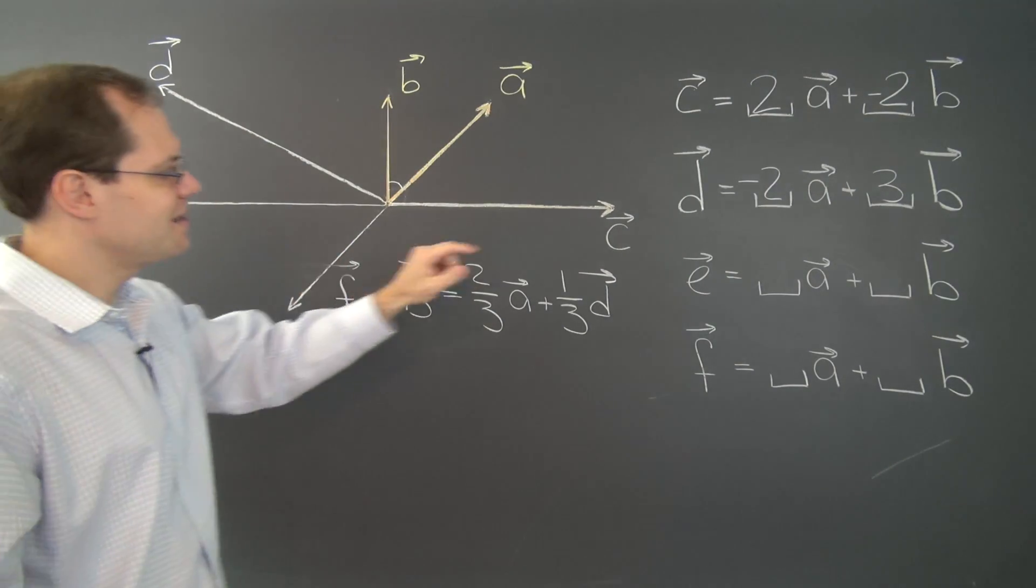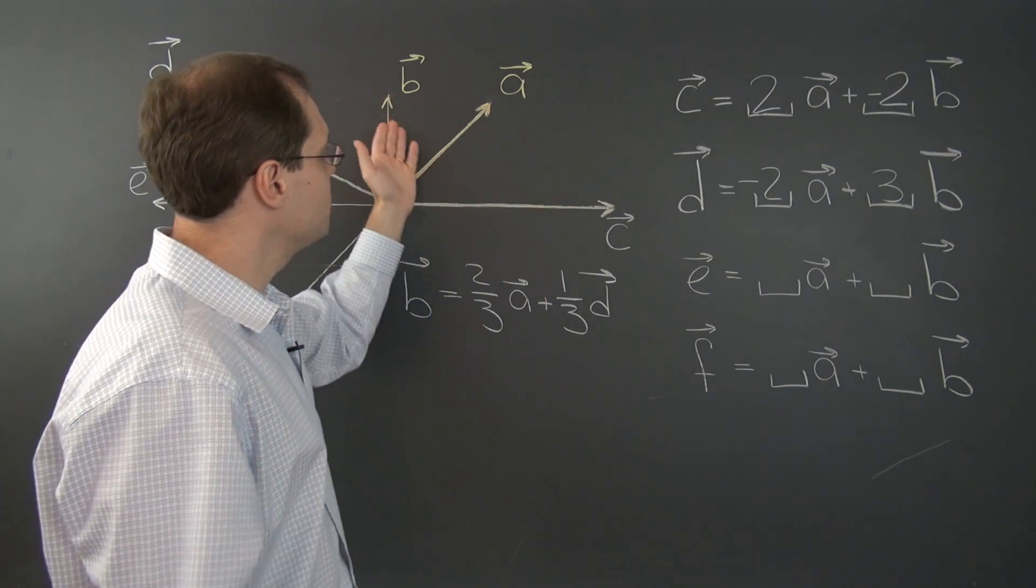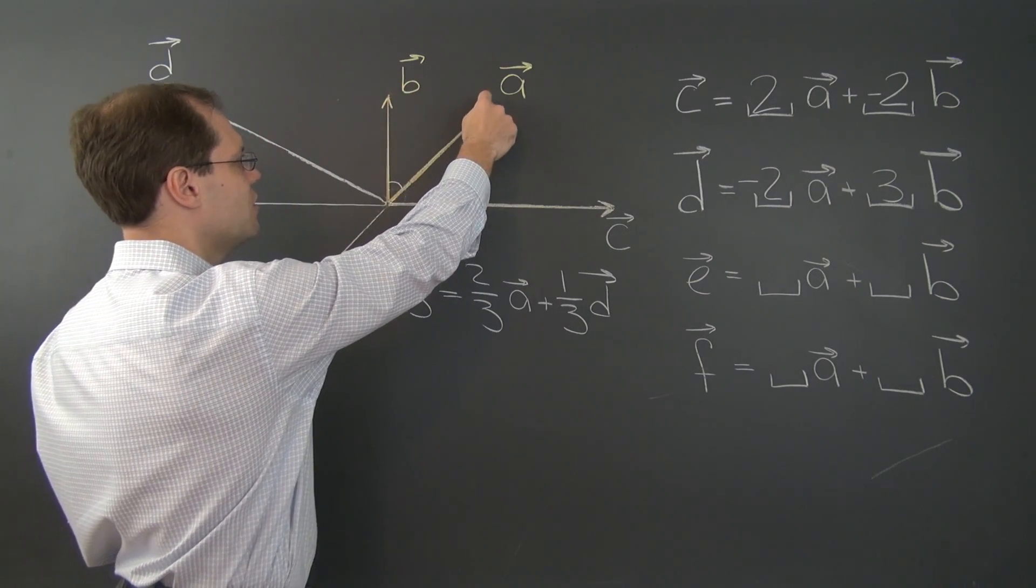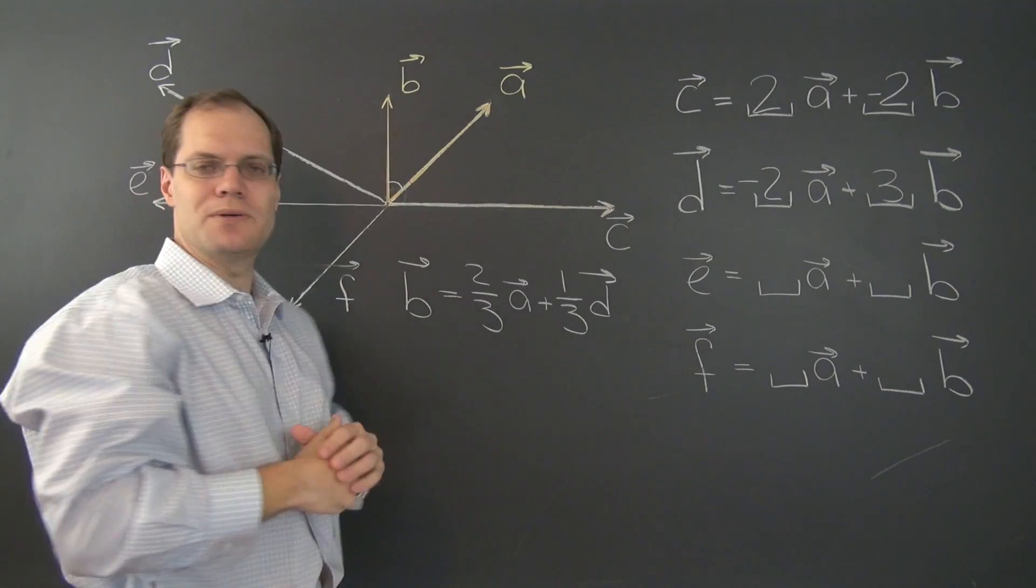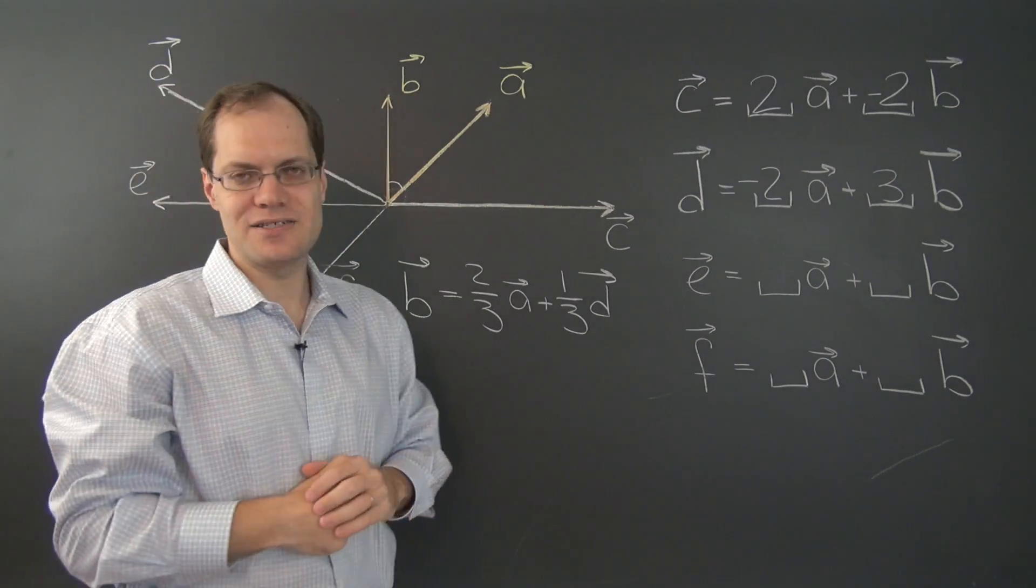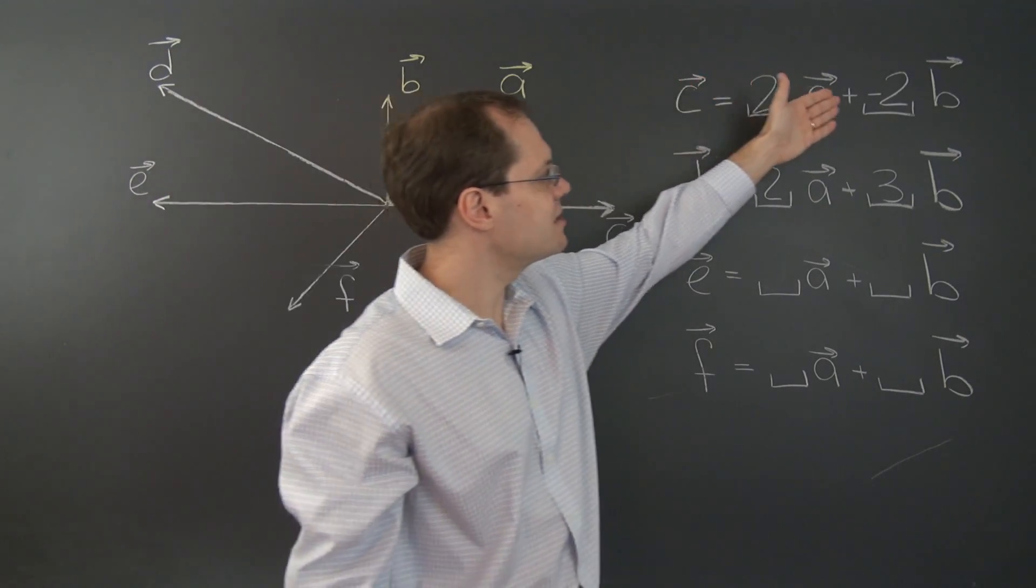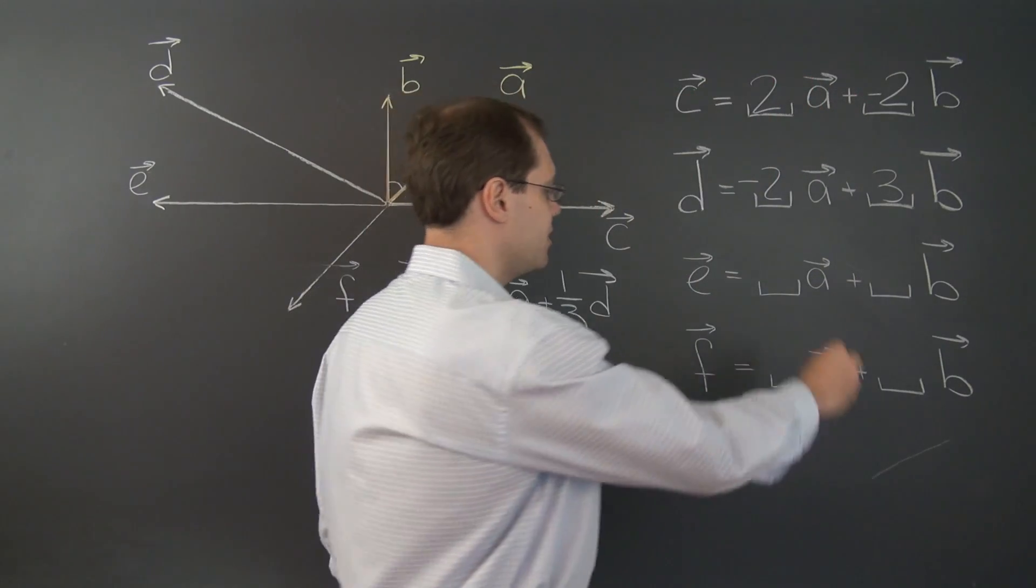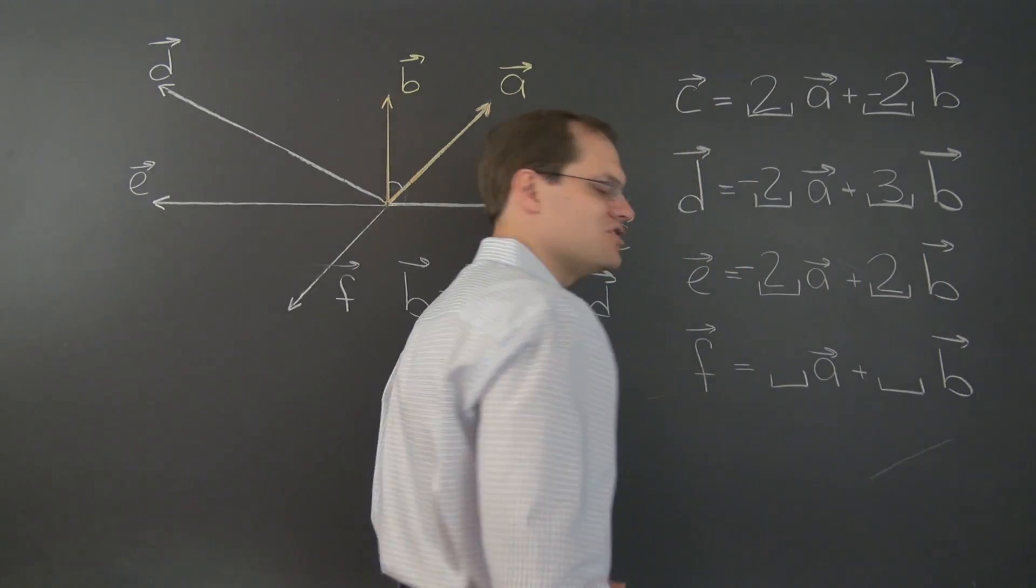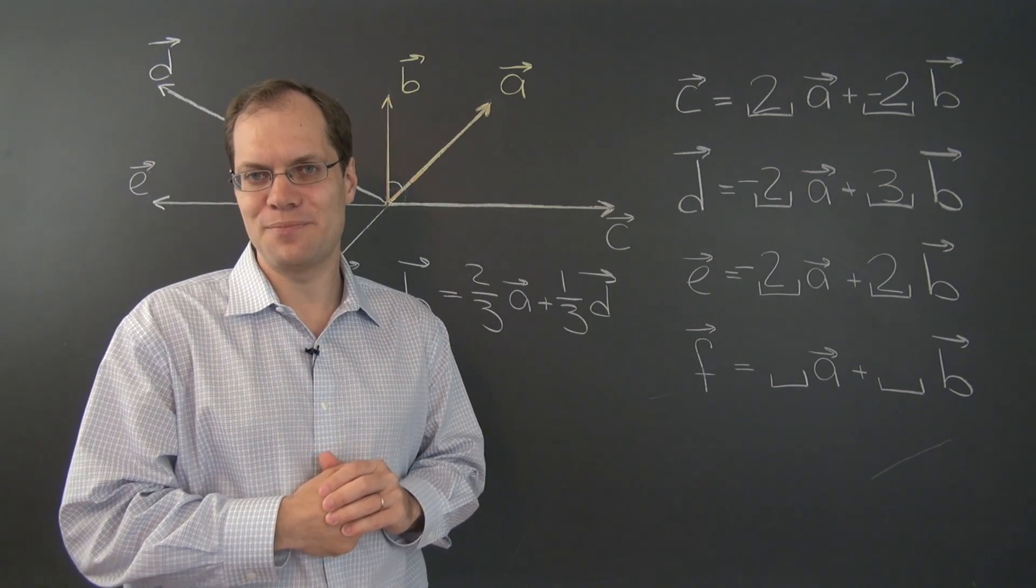Well, e is very similar to c. It's actually opposite of c. So you can repeat the same logic as we did before, this time considering b minus a. Points in the right direction, but it's too short, so we'd better double it. So it would be 2b minus 2a, or you can simply compare e to c and realize that it's 2b minus 2a, which can be written this way, minus 2a plus 2b. And just like that, we're done with our third more complicated decomposition example.